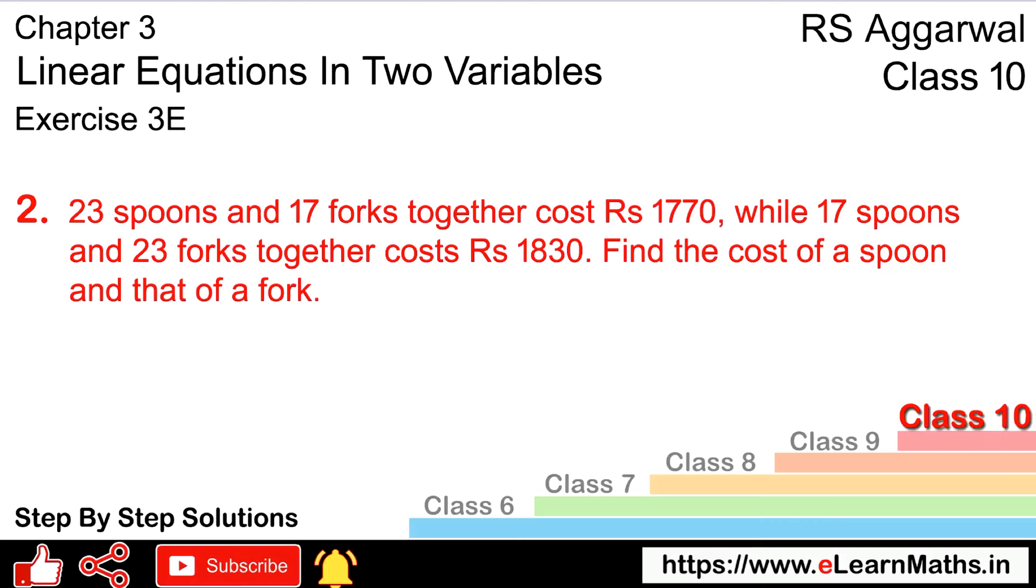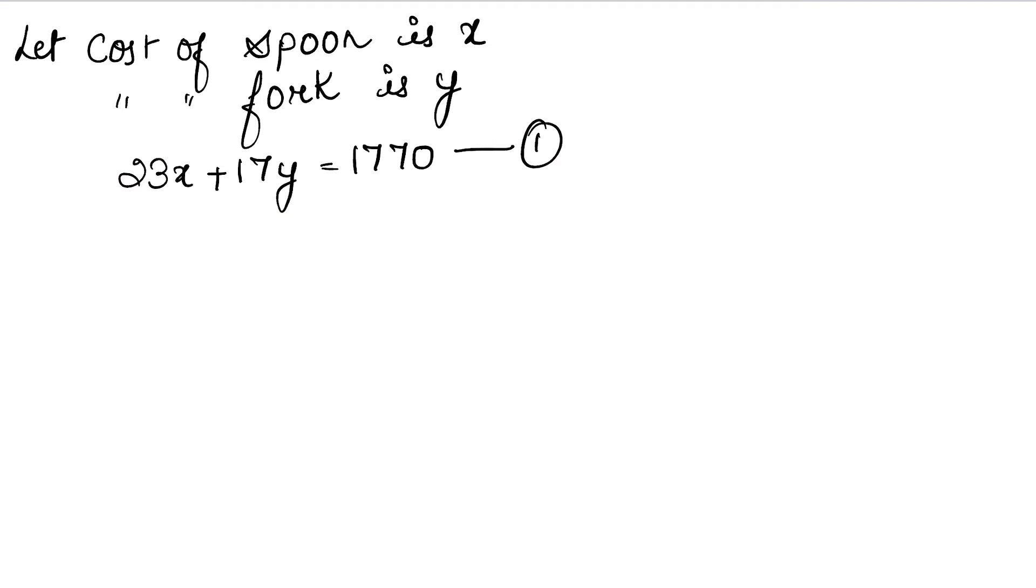Second equation: while 17 spoons means 17x, and 23 forks means 23y together. Together means plus. So 17x plus 23y equals 1830. So we have written: 17x plus 23y equals 1830. This is our second equation.